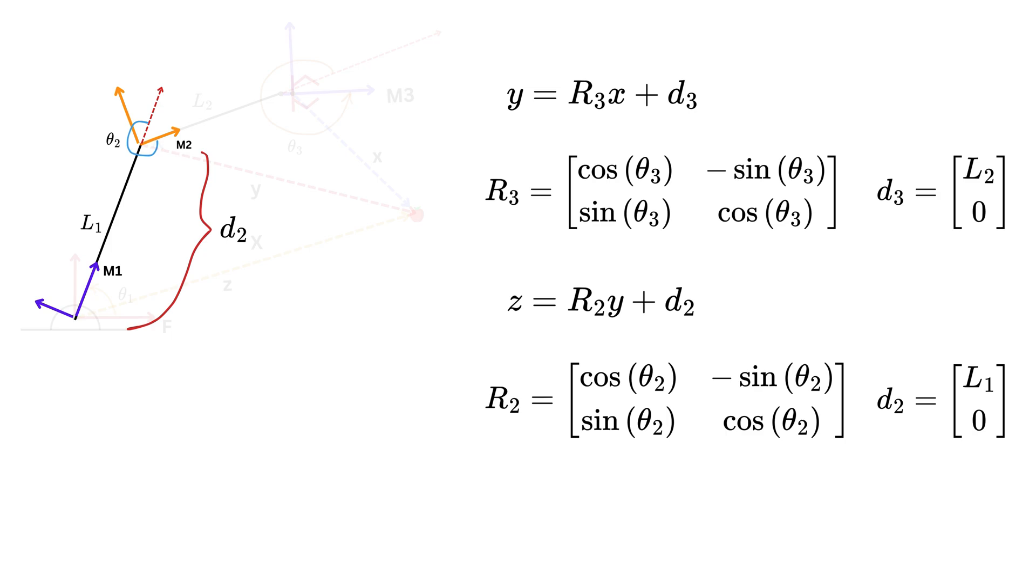Hence, d2 captures the shift of origin from M1 to M2 as L1 units in the x direction and 0 in the y direction.